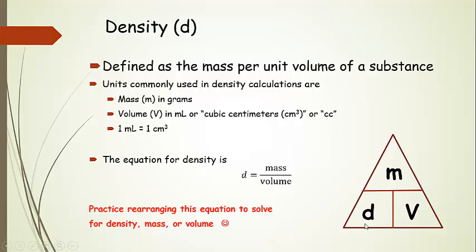I've put this little triangle here. I actually like this guy. So here's density, here's mass, and here's volume. So you can get all the different arrangements. Let's say we want to calculate density, then we would take mass divided by volume.